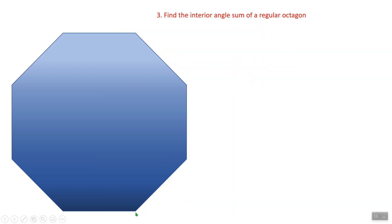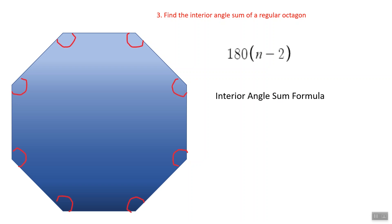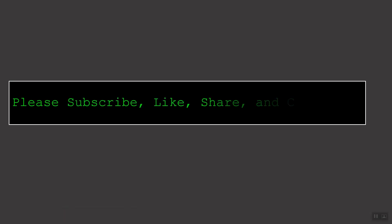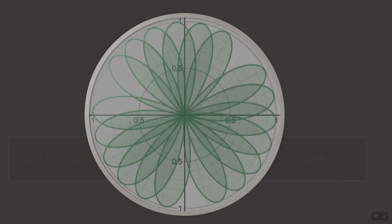Find the interior angle sum of a regular octagon. An octagon has 8 sides, so n = 8. Using the interior angle sum formula: 180 degrees times 6 is 1080 degrees. Thank you for watching. Please subscribe, like, share, and comment. Have a great day.